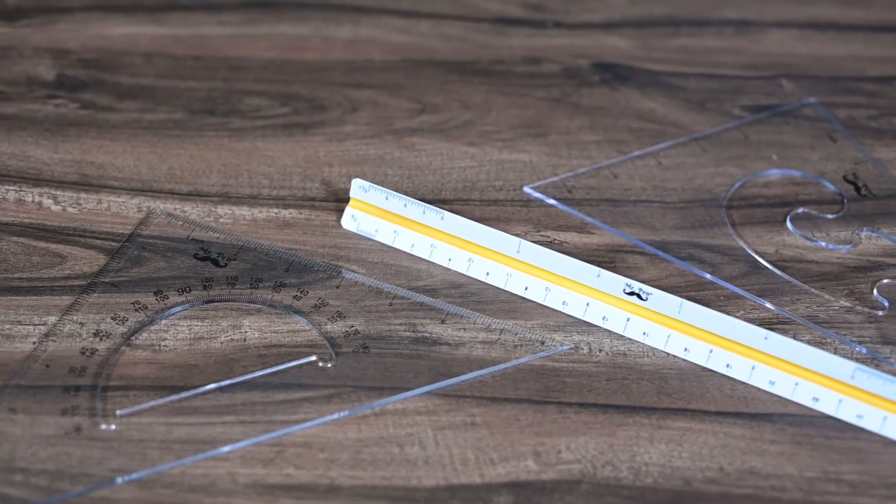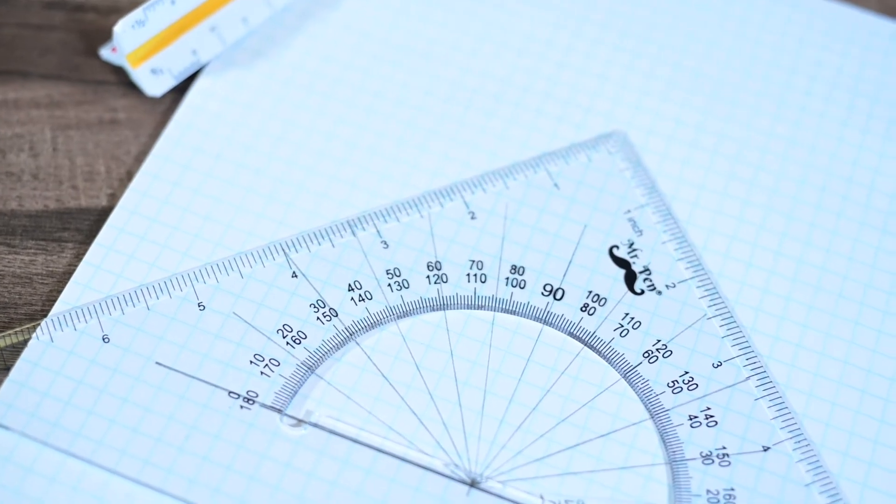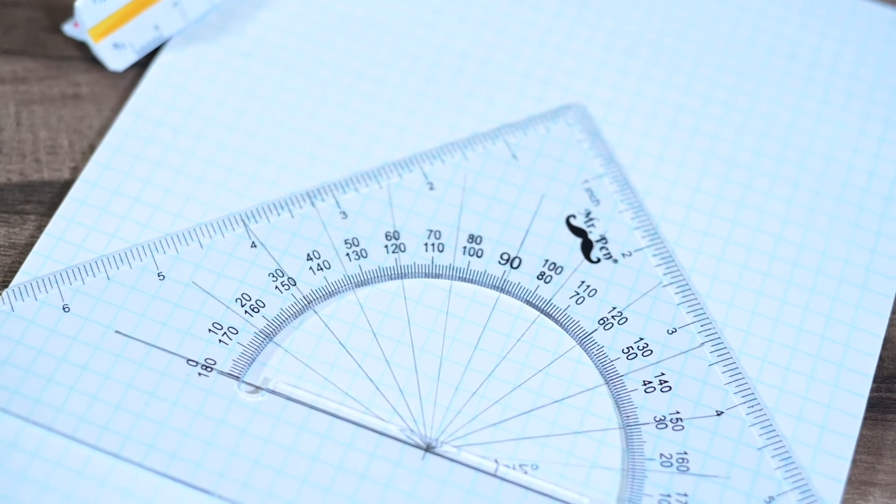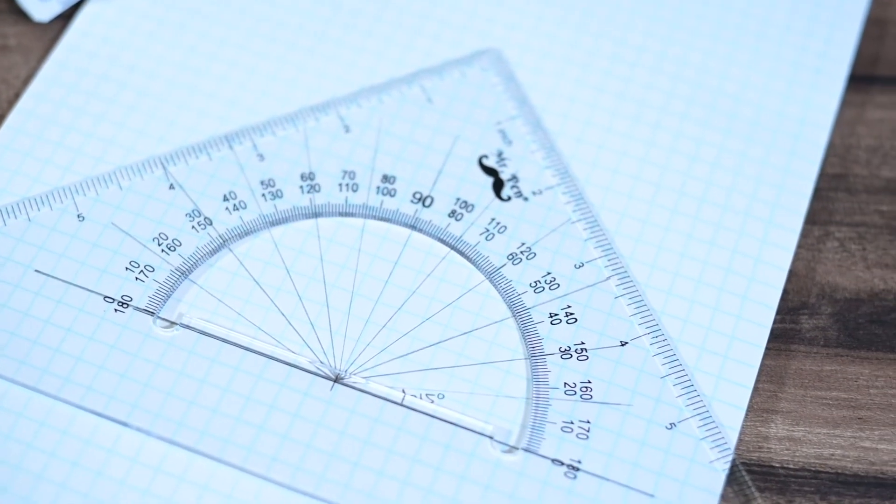The set squares can be used to make parallel and perpendicular lines. By combining the two set squares, you can easily draw from 0 to 180 degree angles in 15 degree increments.